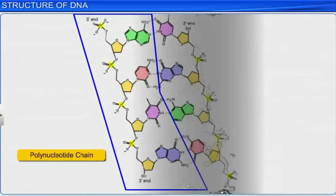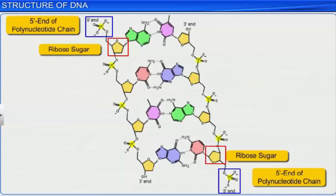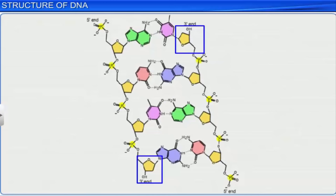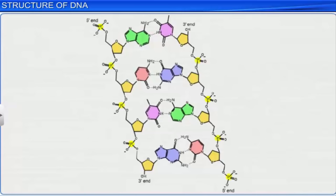At one end of this chain is a free phosphate moiety at the 5' end of ribose sugar, which is called the 5' end of the polynucleotide chain. Similarly, at the other end of the chain is a ribose with a free 3' OH group, which is called the 3' end of the polynucleotide chain.